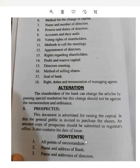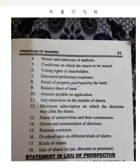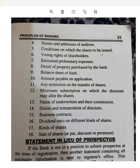Moving to the contents of the Prospectus: first is all points of the Memorandum; second is the name and address of the bank; third is the name and address of directors; fourth is the name and address of auditors; and the conditions on which shares are to be issued. There are around 16 to 18 or more points. A key point is the sale of shares at par, discount, or premium — par value means selling shares at face value, discount means below that price, and premium means above that price.